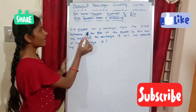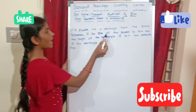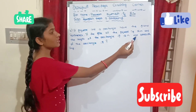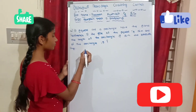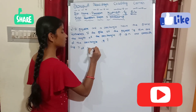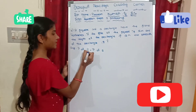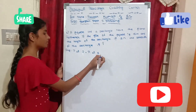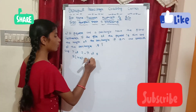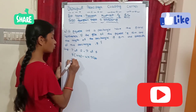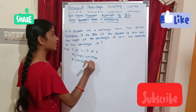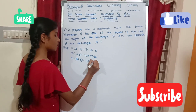Fourth problem: A square and a rectangle have the same perimeter. If the side of the square is 16 meters and the length of the rectangle is 18 meters, find the breadth of the rectangle. Perimeter of rectangle equals perimeter of square. So 2 into (L plus B) equals 4 into side. Substituting: 2 into (18 plus B) equals 4 into 16.